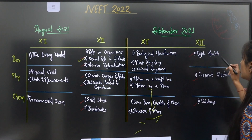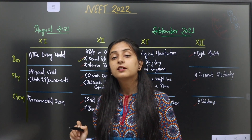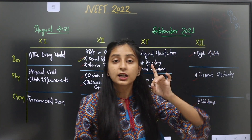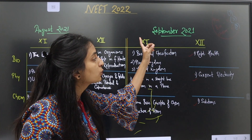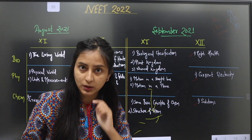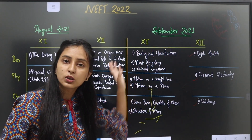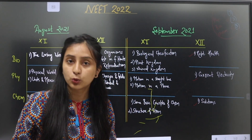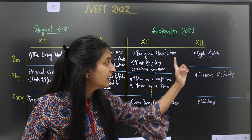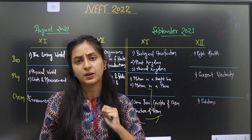In September, you covered Reproductive Health, Current Electricity, and Solutions. For the CBC Term 1 Class 12 board exam, there are 7 chapters in total for Physics. If you have been following me since August, you have done 3 Physics chapters, with more to do in October. In Biology you have done 5 chapters covered across 3 months, with 2 more chapters to do in October. In Chemistry you have done 6 chapters total — 3 in August and September, and 3 more in October.